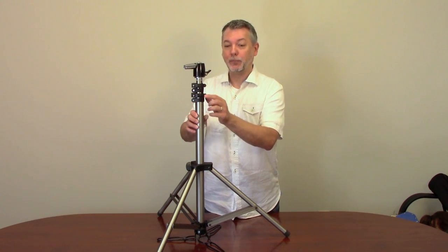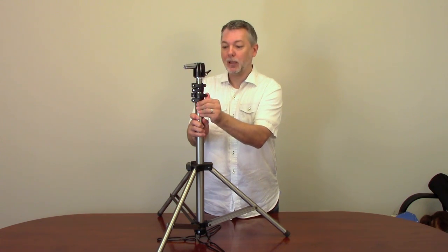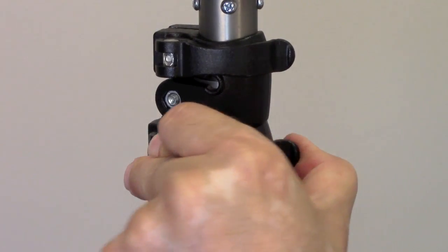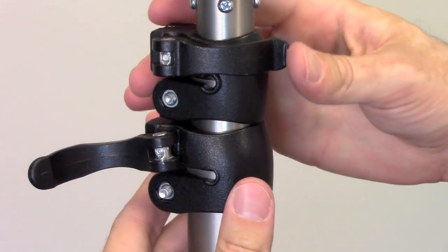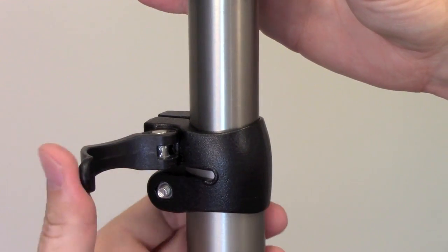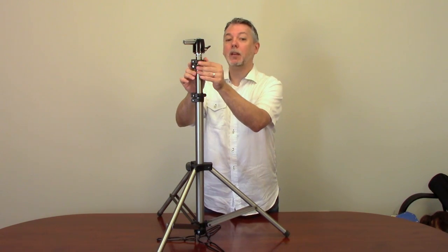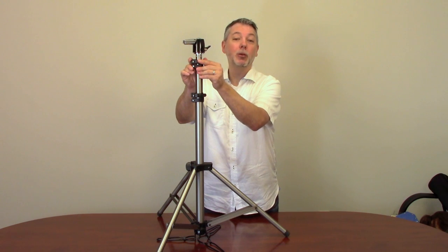Let's start by raising the lower section. I'll open up this bottom clamp right here and I can raise this portion as far as I want and close it back. You simply do the same with the second section until you reach a comfortable height.